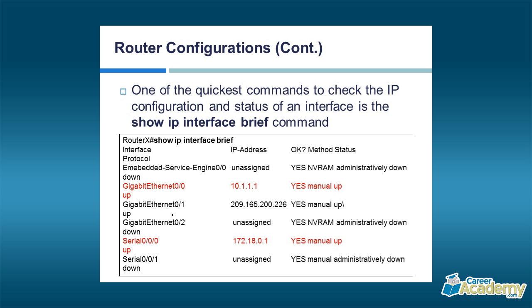When you want to look at information about an interface but not the stats or counters, we use show IP interface brief. It lists all of the interfaces and shows any assigned IP addresses. Remember, that's what would be considered the local route in the routing table. Without the word brief, you would also see the subnet mask. It also gives other information I like to see — the status of the interfaces, whether they're up or administratively down. Administratively down means somebody has the shutdown command typed in there.